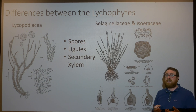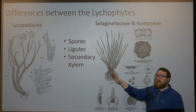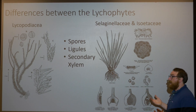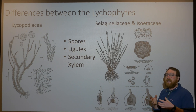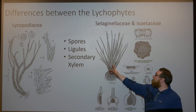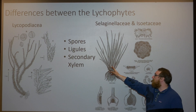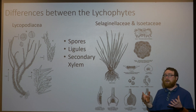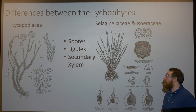A ligule is a very specialized piece of leaf tissue that differentiates the leaf from the stem. This is the first time we actually see major plant organs start to split and become different things. The ligule is based in a small cluster at the base in the Isoetaceae, and in the Selaginellaceae they're going to form true leaf tissues.